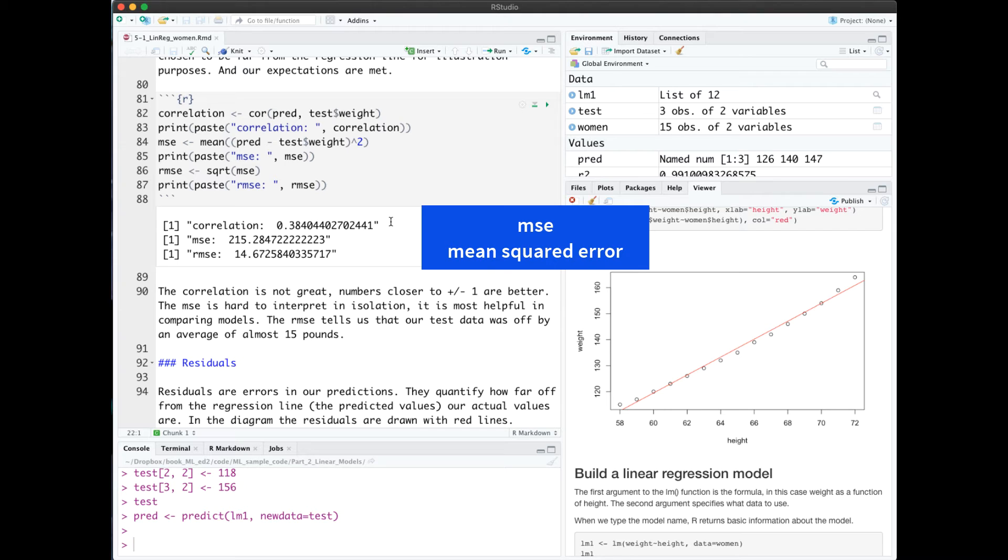The mean squared error is exactly what it sounds like. It's the error squared and then averaged. And then root mean squared error is taking the square roots of that. The benefit of root mean squared error is that it's in units of y. So we can see that we were almost 15 pounds off in our test data.